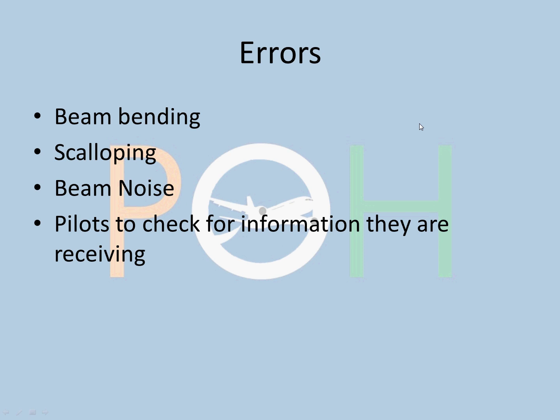Errors. ILS will obviously have some errors. Beam bending is majorly because of atmospheric conditions, where the ILS frequency, ILS transmission, the signals are getting interfered by the atmospheric conditions.